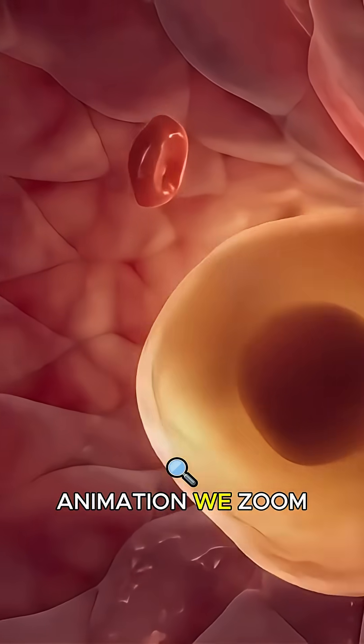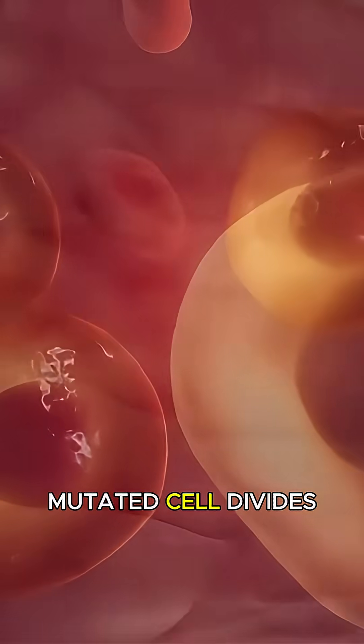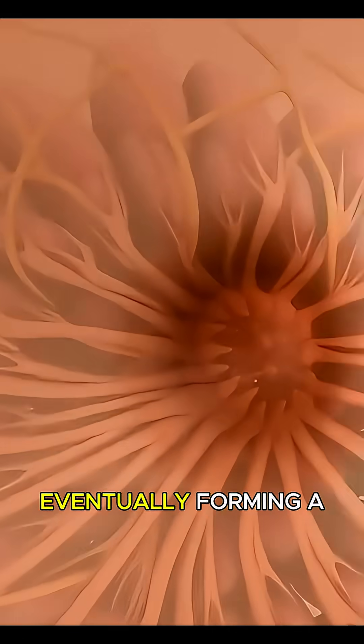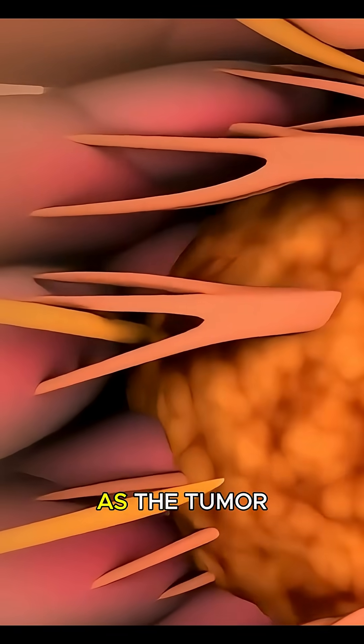In this 3D animation, we zoom in to show how a single mutated cell divides again and again, eventually forming a mass.